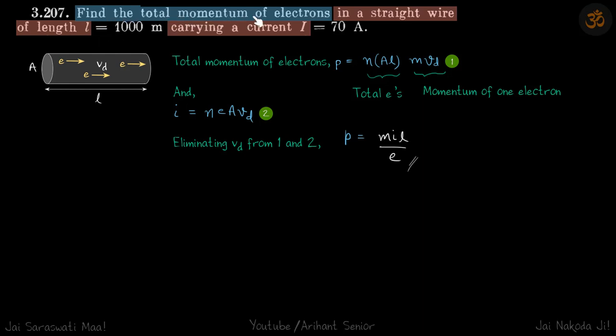We need to find the total momentum of electrons in a wire carrying a current I. So we will write momentum of one electron and then multiply it by the total number of electrons. That will be the total momentum. So let's start from what they have asked.